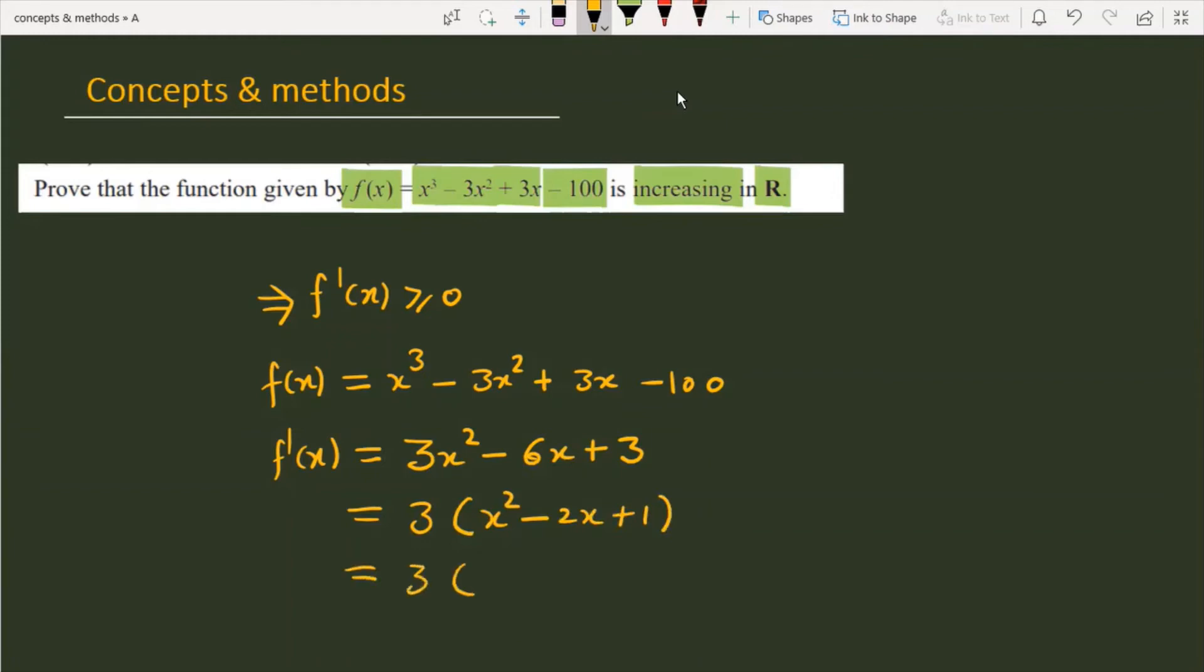Then you can see that 3(x - 1)². So the first derivative is 3(x - 1)². Now you will know that (x - 1)² is always greater than or equal to 0.